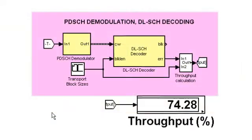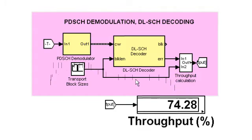To recover the transmitted bits in the downlink shared channel, we first perform PDSCH demodulation. This includes PDSCH decoding, layer demapping, symbol demodulation and de-scrambling. Next, DLSCH decoding is performed and a block CRC is used to deduce the number of blocks in error and the overall throughput, which is shown as a percentage of the maximum possible throughput.